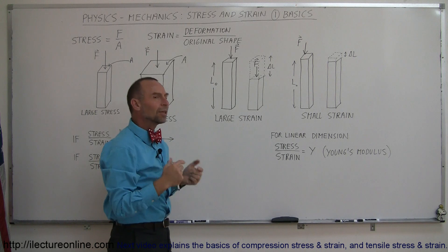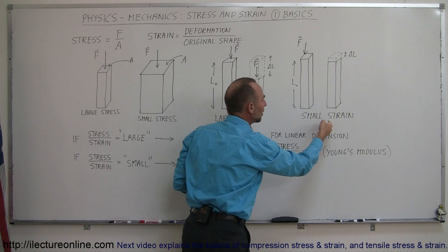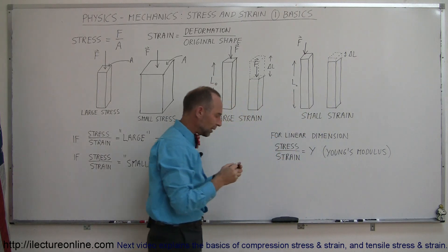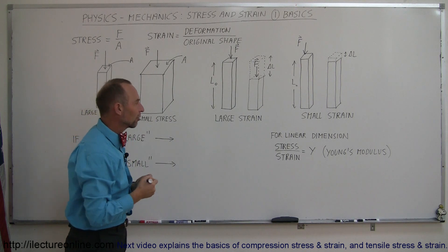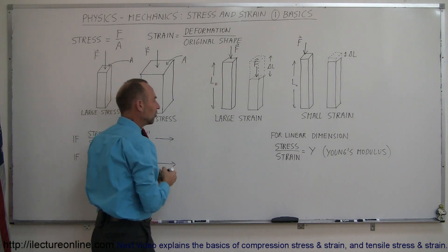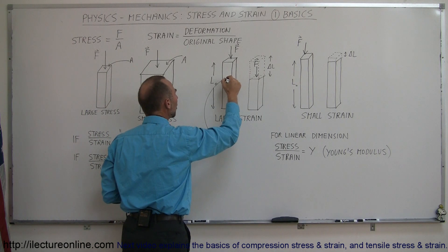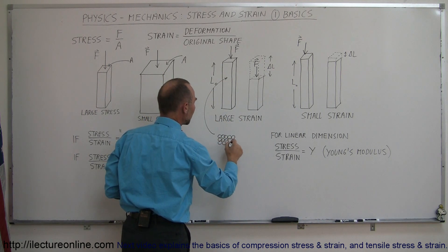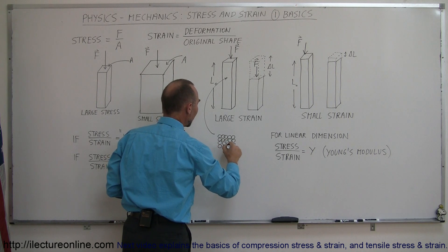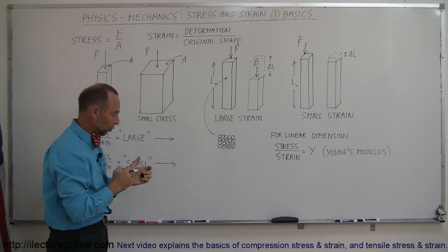Why would some beams have a large strain when a certain amount of force is applied, and other beams have a very small strain? That has to do with the strength of the material. Let's imagine, for example, that this is a beam made out of steel. If we zoom in to a very small portion of the beam and look with a very powerful microscope, we see that the beam is made up of atoms.